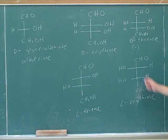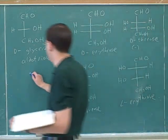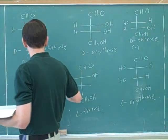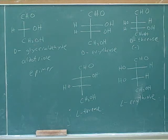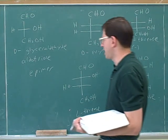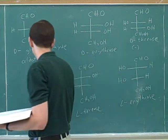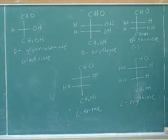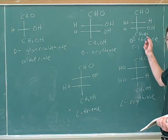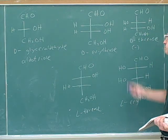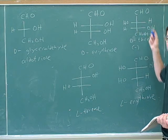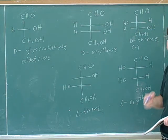When two sugars differ at only one stereocenter, they are also called epimers — a specific type of diastereomer. The key point: to get the L-form of a sugar, you must reverse all stereocenters. If you only reverse the bottom stereocenter, you will get an L-sugar, but it won't be the L-form of the sugar you started with.